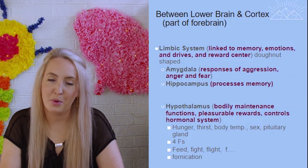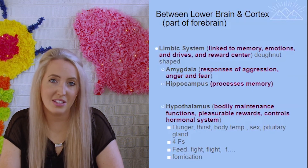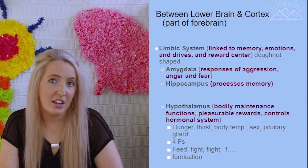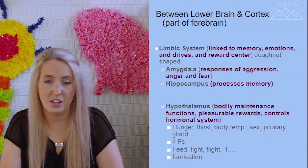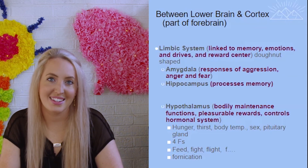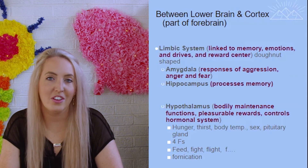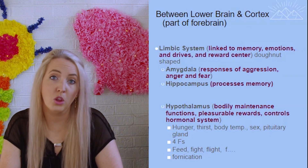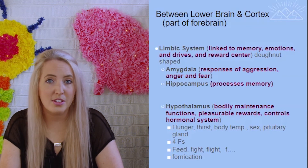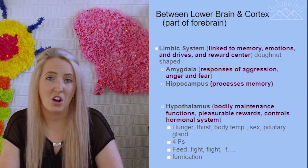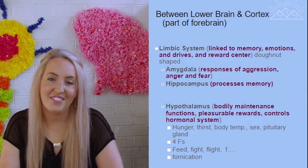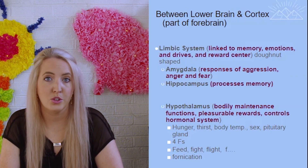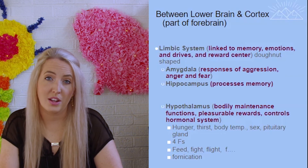An interesting side note about the hypothalamus and the fight or flight response is that there are actually four components of that survival mechanism. We often think of fight or flight as our response to danger, but people have four different responses when faced with stress or danger. Some fight back, some will run away, but others will freeze, and others will fawn. Fight, flight, freeze, or fawn — fawning is when we give in to the stress or danger in order to appease whatever the aggressor might be.